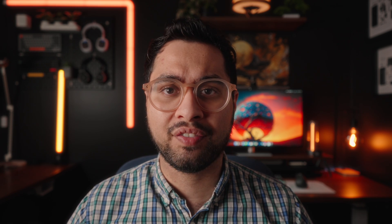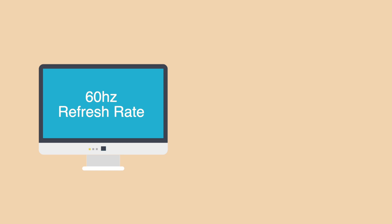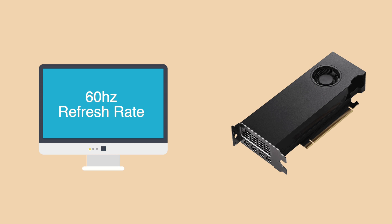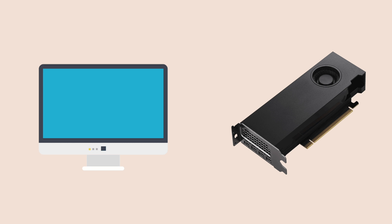Let's assume we have a basic monitor with a refresh rate of 60Hz, which means it can produce up to 60 frames in any given second. Then we have our graphics card, which can produce a certain amount of FPS for a given game as well. In an ideal world both the GPU and the monitor would be producing exactly 60 frames per second, so screen tearing would never occur because everything is in synchronization. However in the real world your graphics card is more often than not producing less or more frames than the native refresh rate of your monitor.